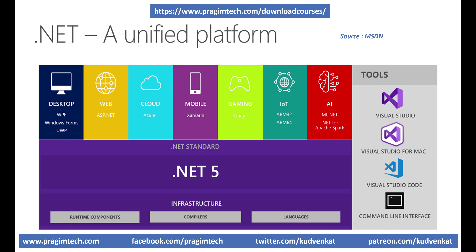The idea is to unify all these different frameworks — WPF, Windows Forms, UWP, ASP.NET, Azure, Xamarin, Unity, ARM 32 and 64, ML.NET, .NET for Apache Spark, etc. We also want to be able to use any development tool of our choice: Visual Studio, Visual Studio for Mac, Visual Studio Code, or Command Line Interface. So, one .NET is the goal — Microsoft wants to create one unified .NET platform, and .NET 5 is the stepping stone towards that goal.